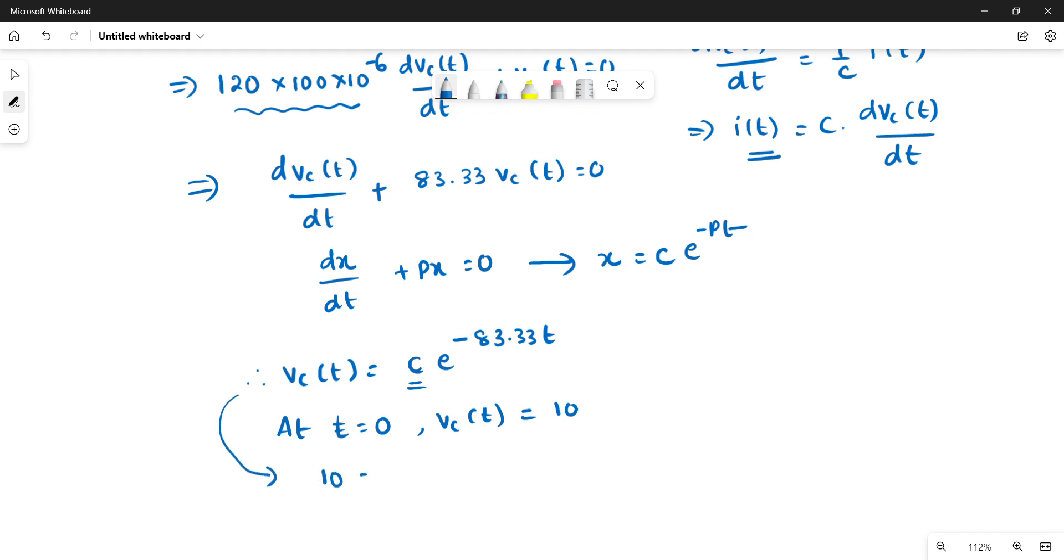The c value we need to find, so using initial conditions, at t equal to 0, voltage across the capacitor we have already found is 10 volts.